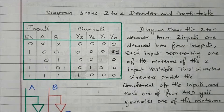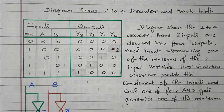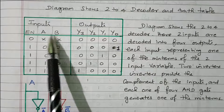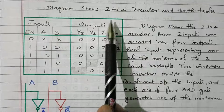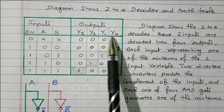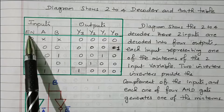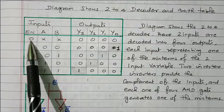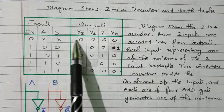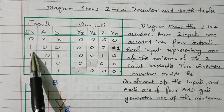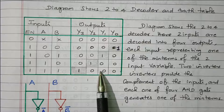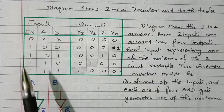Truth table of the 2-to-4 decoder. The inputs are A and B — we have 2 inputs, meaning 2 digits. There are 4 possible outputs: Y3, Y2, Y1, and Y0. We also have an enable input. If enable is 0, whatever may be the input, the output is 0 — the decoder is disabled.